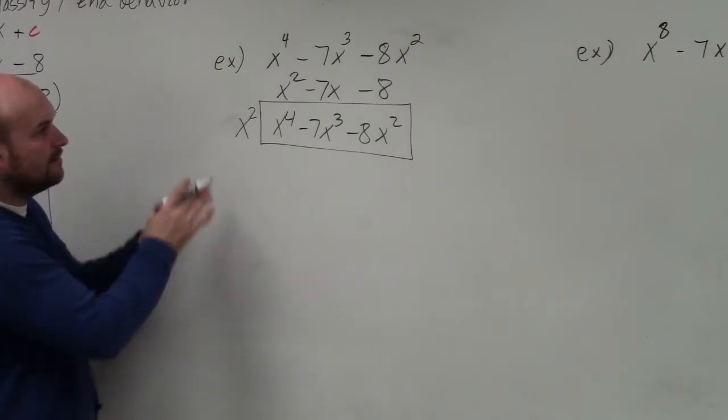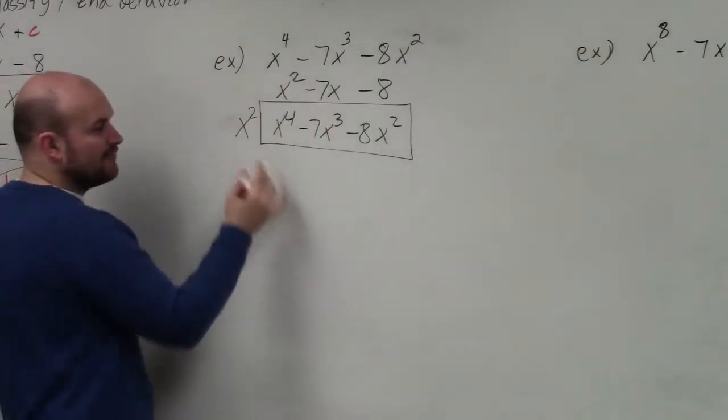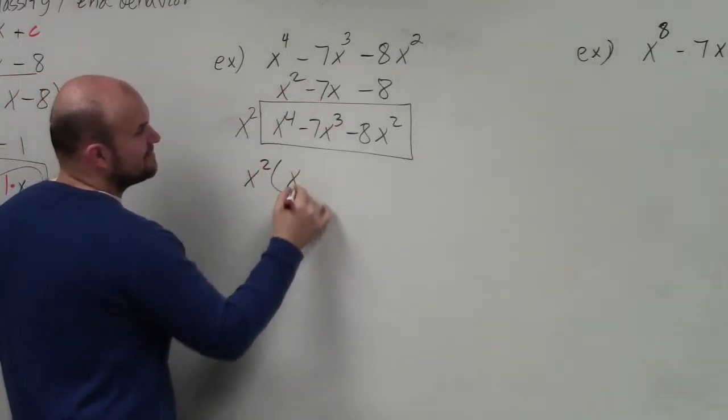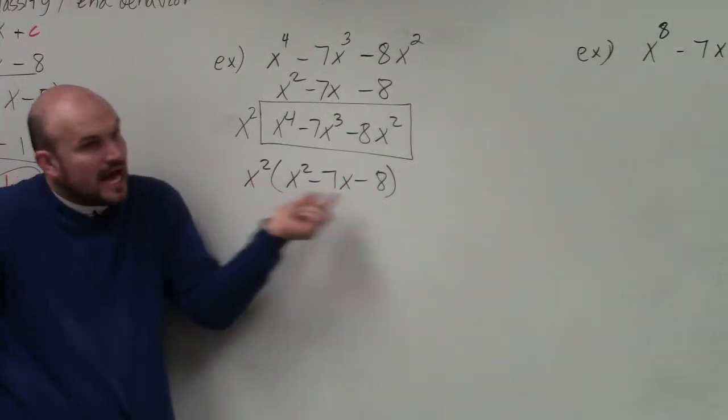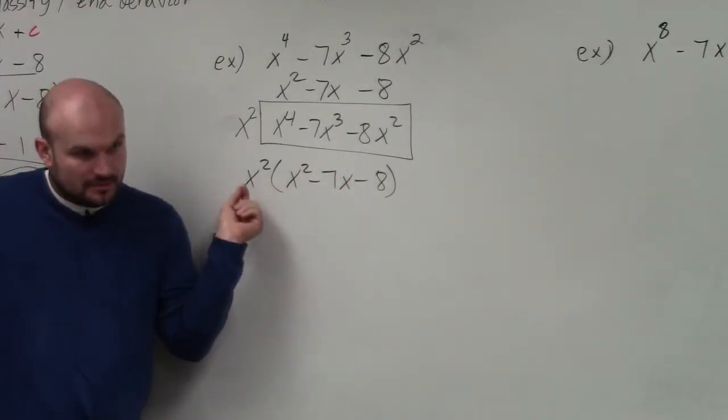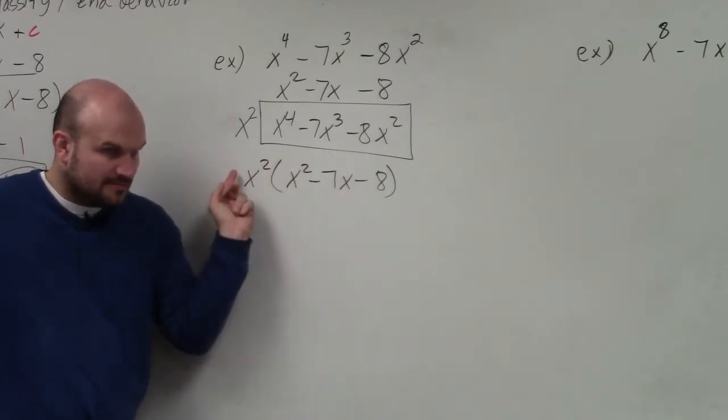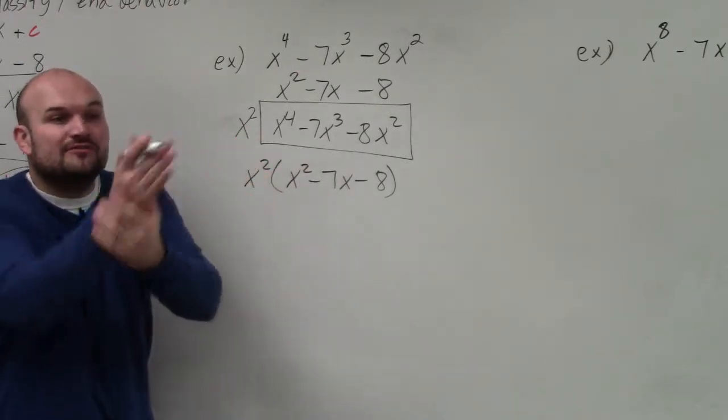So now I've written this as x squared times x squared minus 7x minus 8. Is this now factored? Student: No. Teacher: Yes, it's written as a product, right? But can we factor it further?